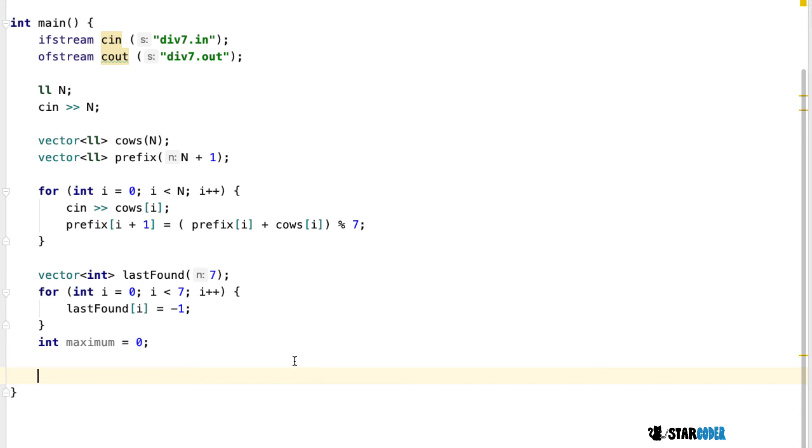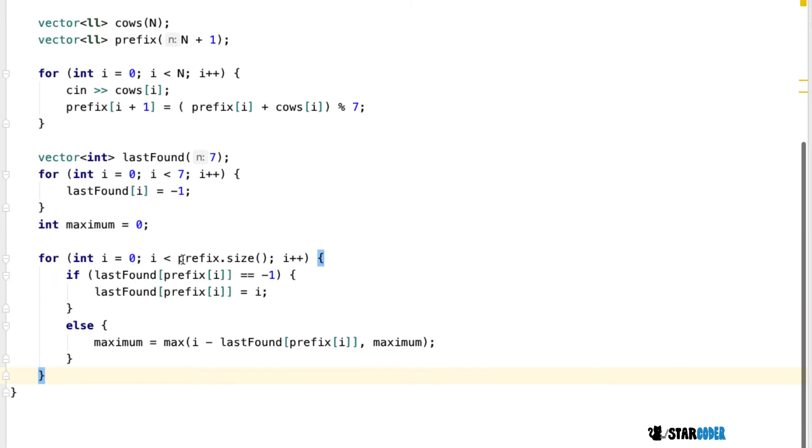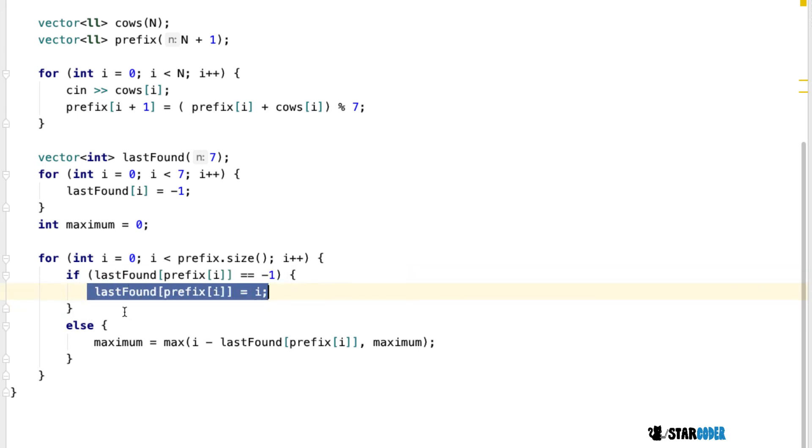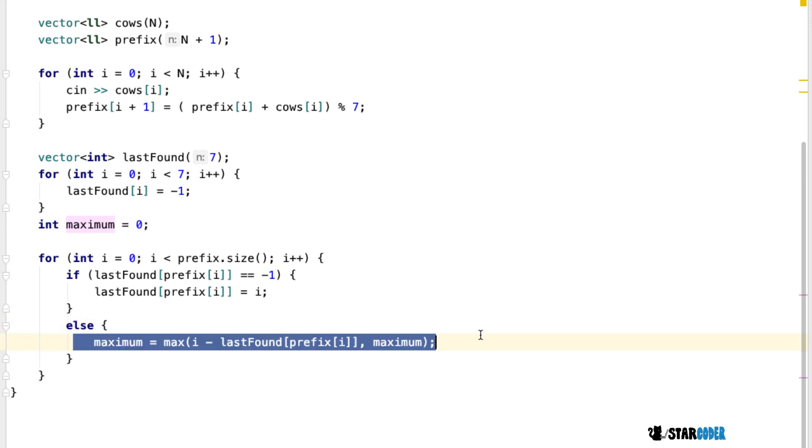And then we're just going to loop through every value. We're going to loop through the prefix sum. And for every value, first we're going to check if it's already been found. So if there was already an instance of it beforehand, then we're going to skip this. But if this is the first occurrence, we're just going to assign last found prefix i to our current index. And if it hasn't been, which basically means that there is a number with the same prefix value previously, we're just going to make the maximum the max of our index minus that index, basically giving us the size and itself.